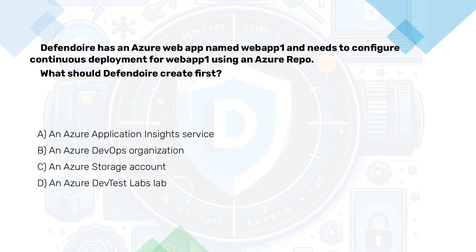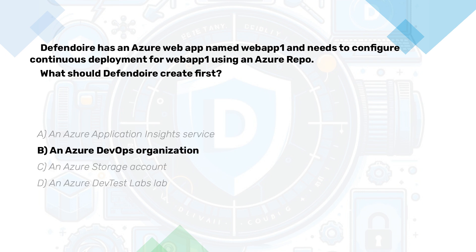We have an Azure Web App and need to set up continuous deployment for the Web App using an Azure Repo. What should we create first? A. An Azure Application Insights Service. B. An Azure DevOps Organization. C. An Azure Storage Account. D. An Azure DevTest Labs Lab. Now pause the video, think, then continue. The correct sequence to configure continuous deployment using Azure Repo would involve setting up a DevOps organization first. This structure provides the foundation for managing teams and environments necessary, ensuring proper resource management and collaboration among development and testing teams.